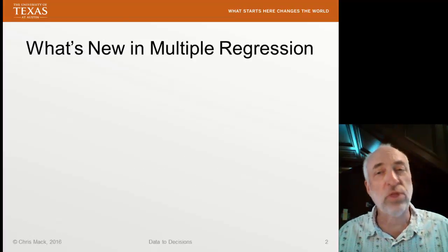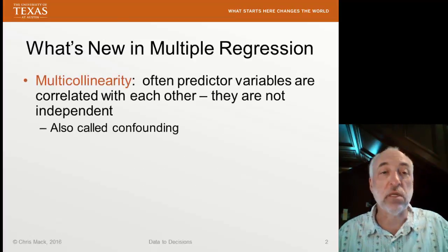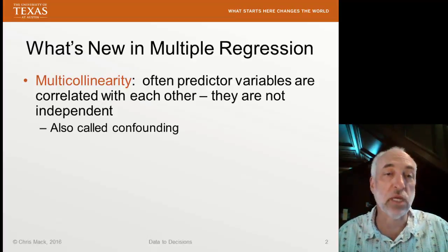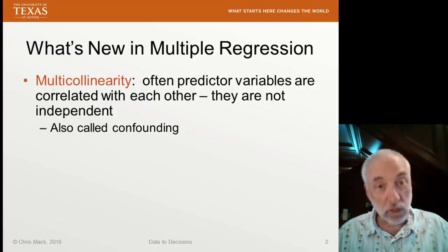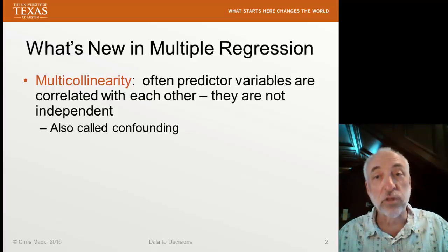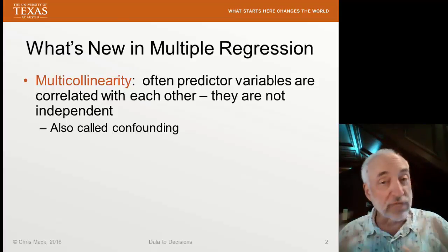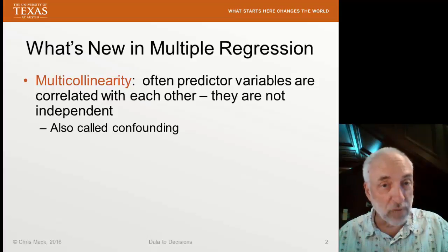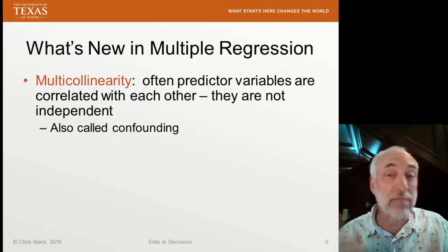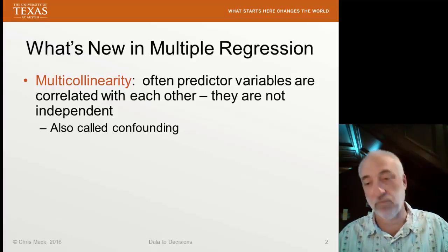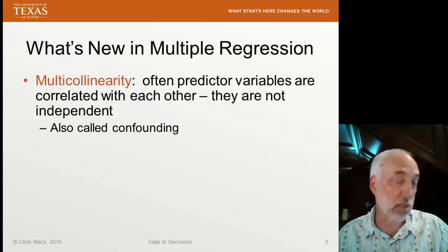As we saw, there are a few new things in multiple regression, but the one major new problem that we can face is multicollinearity. This is the problem when one or more predictor variables are highly correlated with other predictor variables — the regressors are not independent of each other. We sometimes call this confounding, and it can lead to a number of problems which we're about to discuss.